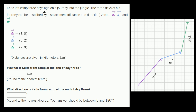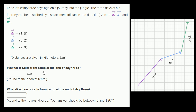Kieda left camp three days ago on a journey into the jungle. The three days of his journey can be described by displacement vectors — displacement is distance with direction. The vectors are d1, d2, and d3, and they're listed here. The distances are given in kilometers. How far is Kieda from camp at the end of day three?